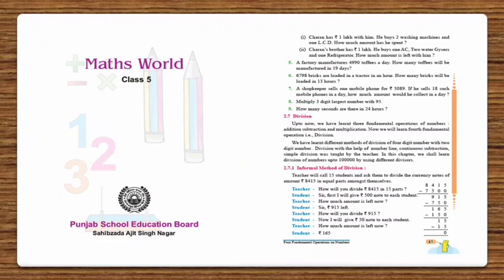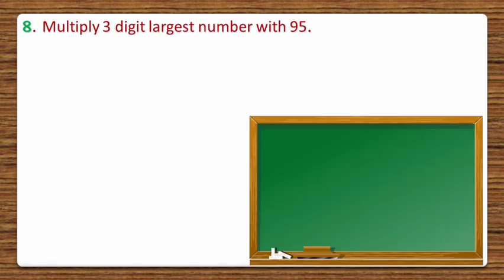Hello dear students, welcome to online classes. Today we'll do question number 8 and 9 of exercise 2.6 of class 5th maths. Question number 8 is: multiply the 3-digit largest number with 95.